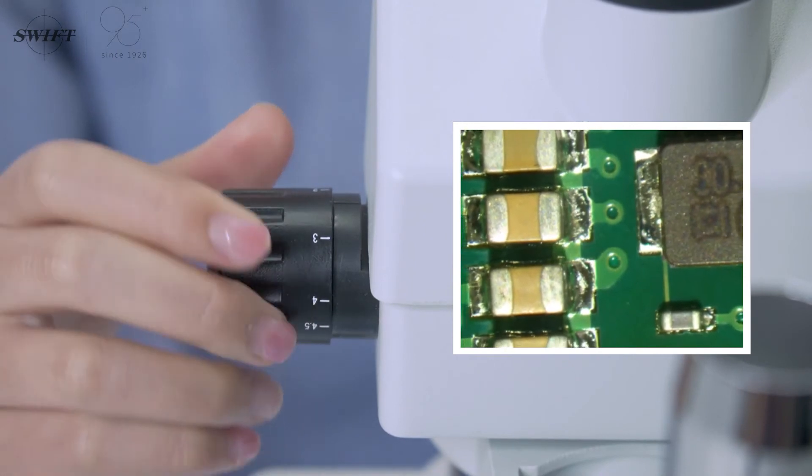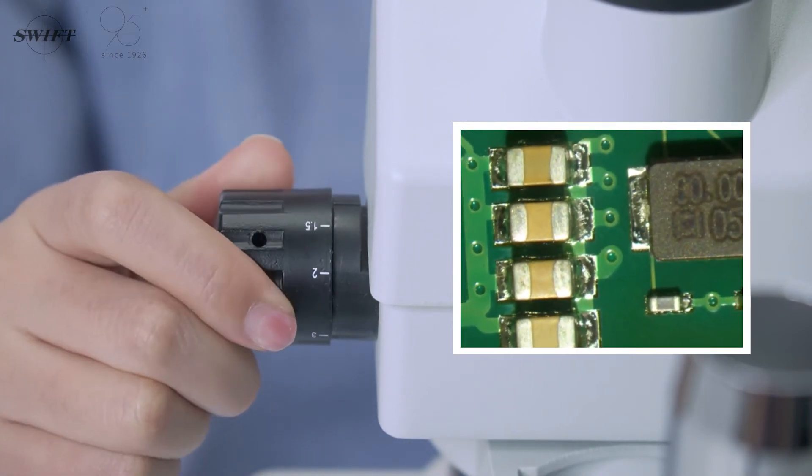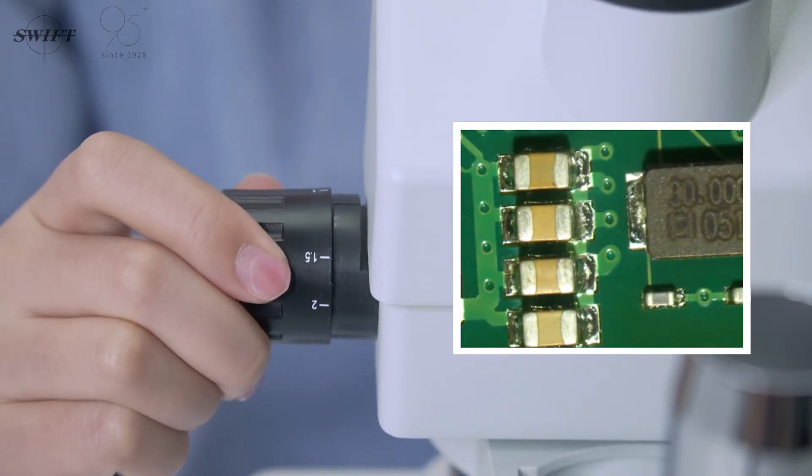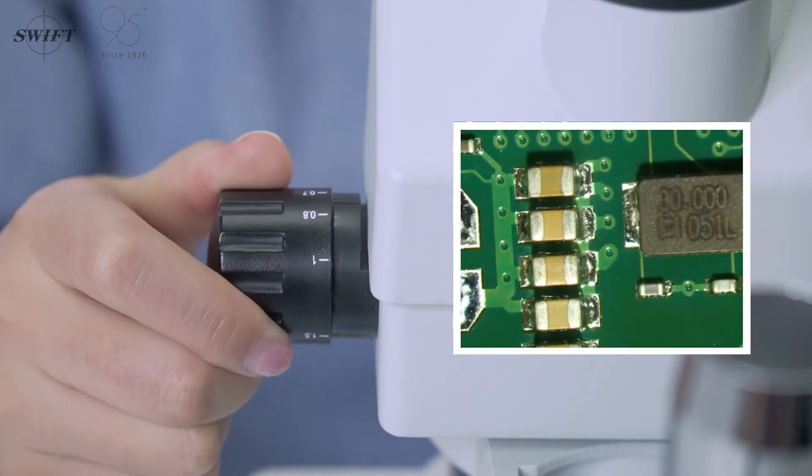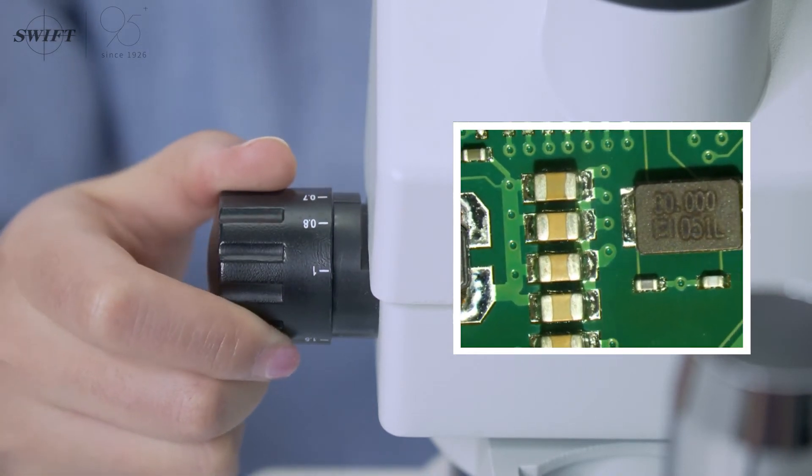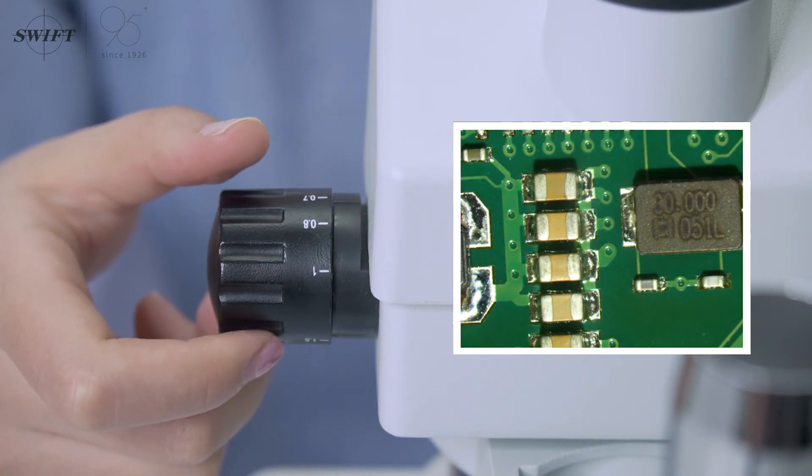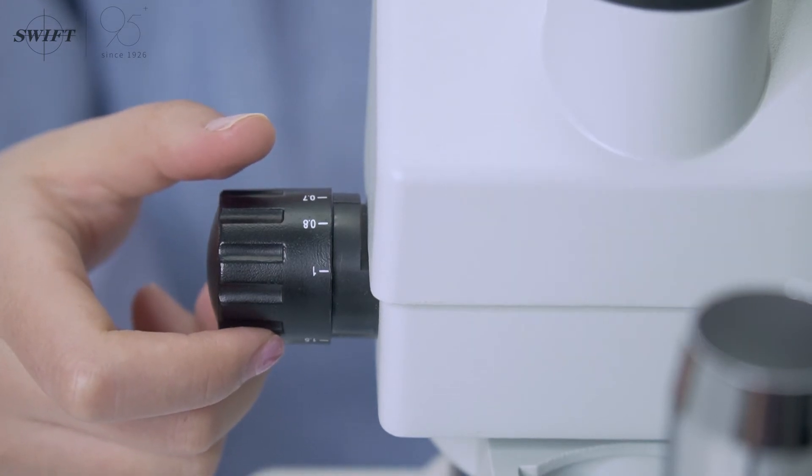Use the zoom handwheel to adjust from high magnification to low magnification. At this time, the image under the microscope should be continuously zoomed and kept clear. This is the unique observation effect brought by the continuous zoom stereo microscope.